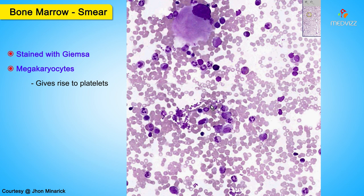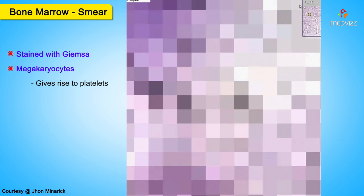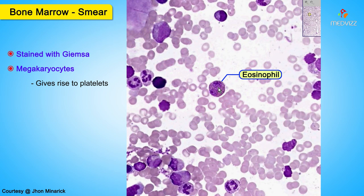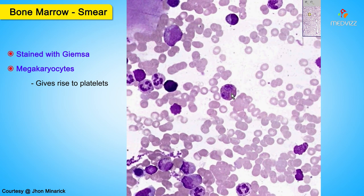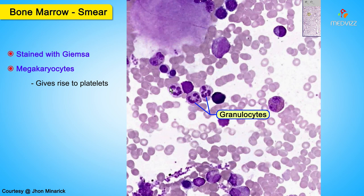Without going into all the details, let's just say that every one of these cells that have coarse granules in them will be in the white cell series and usually the granulocytic series. In addition, if we see that some of these granules look very red and have a bilobed nucleus, we know that this is either an eosinophil or something that will soon give rise to a mature eosinophil. The rest of these are granulocytes.